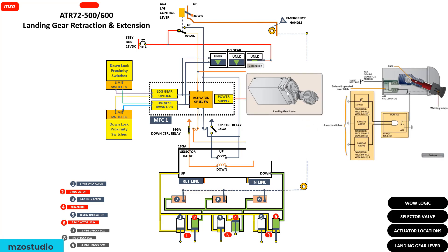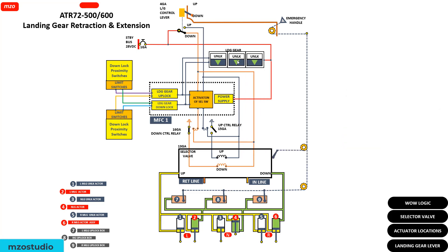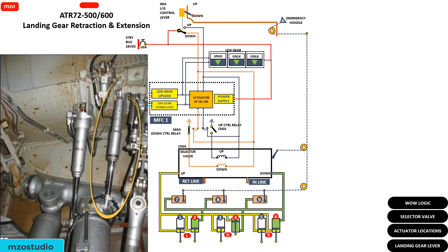This is the landing gear control lever, and this is the unlock and down indication. It has a primary and secondary system. This is the modification computer, this is the proximity switch located on the landing gear. Here is the proximity switch upload.